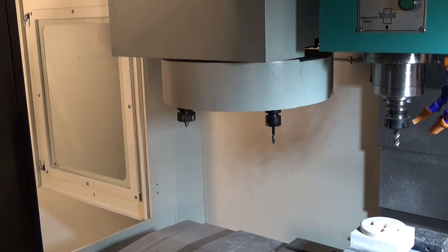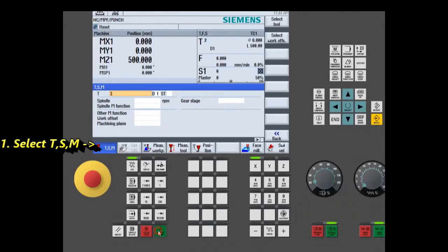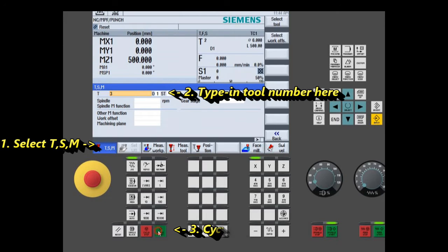So if I want to, we're on tool 2 now, if I want to put in tool 3, press TSM tool 3, cycle start.